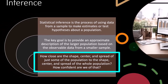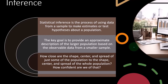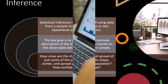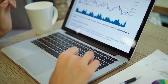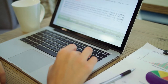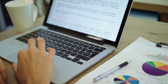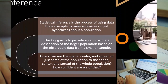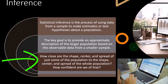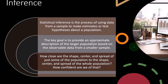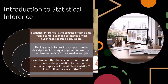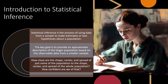So how close the shape, center, and spread of just some of the population is to the shape, center, and spread of the whole population — that's what we're asking. We want to know those characteristics for the sample, not so that we can understand the sample more, but so we can infer that and say, is this going to be similar for the entire population? It's the entire population that is important. This question of how confident we are gets to be quite tricky, and we'll dive into that more in future presentations.